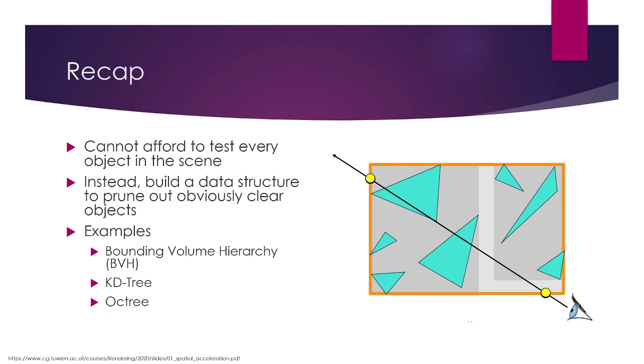Some examples of this are a bounding volume hierarchy, a KD tree, and an octree. On the right in this image, you can see an example of a bounding volume hierarchy illustration. All of the objects are grouped into multiple bounding volumes, and we can first check if the ray touches the volume before ever checking if any of the objects inside of the volume were hit as well.